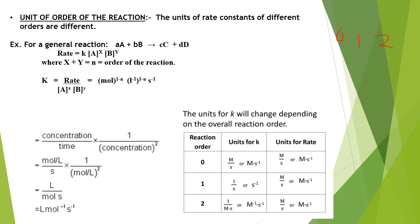The units of rate constant for different orders of reaction are different. For a reaction with total order N (where X plus Y equals N), the common formula for the unit of rate constant is: mol to the power (1 minus N), liter to the power (N minus 1), second inverse — where N represents the order of the reaction.